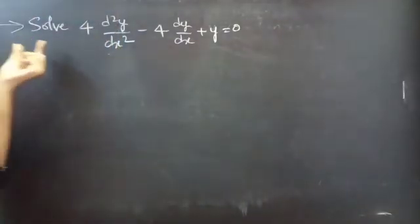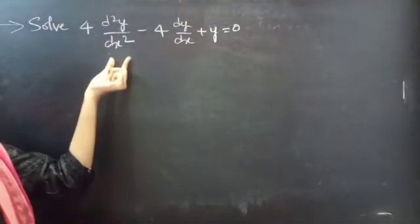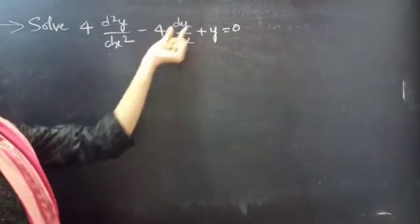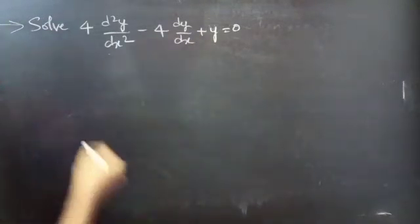Problem: Solve 4 into d²y/dx² minus 4 into dy/dx plus y equals to 0.